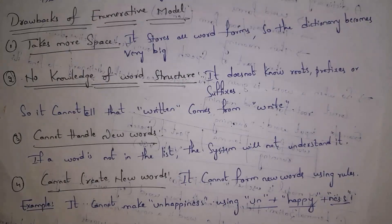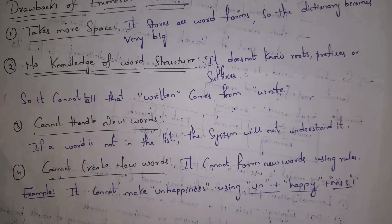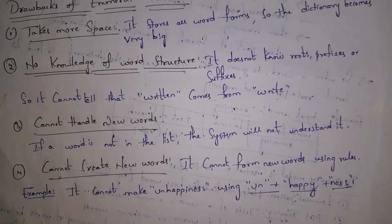The disadvantages of the enumerative model are: first, it takes more space because all word forms are stored, making the dictionary very large. Second, it has no knowledge of word structure — it does not break words into prefixes, suffixes, and roots, so it cannot tell that 'written' comes from 'write'. Third, it cannot handle new words — if a word is not in the list, the system cannot understand it. Fourth, it cannot create new words — for example, it cannot make 'unhappiness' from 'un' plus 'happy' plus 'ness'.